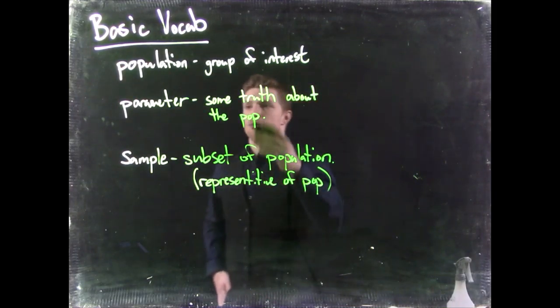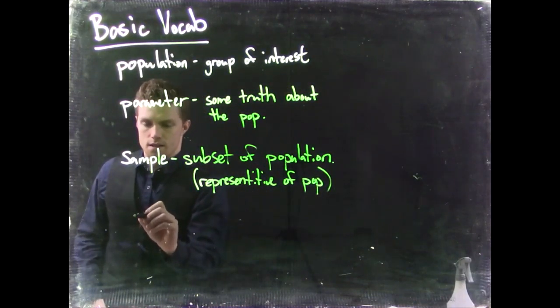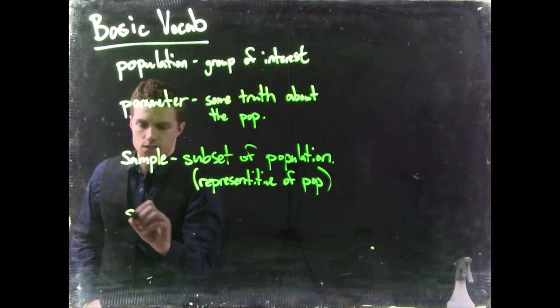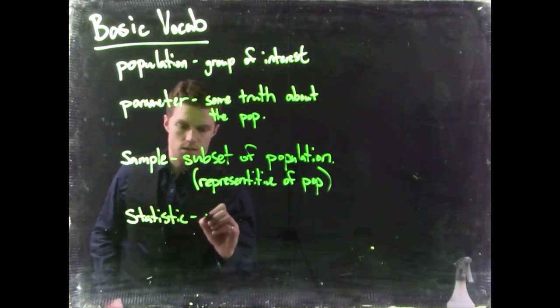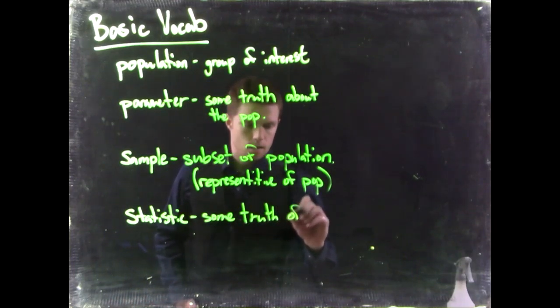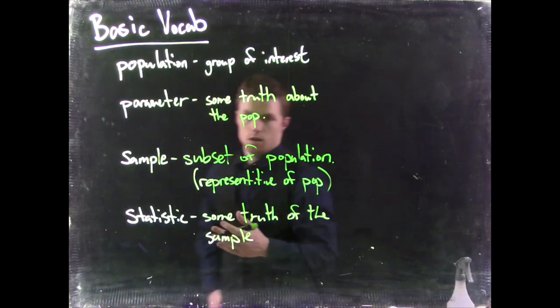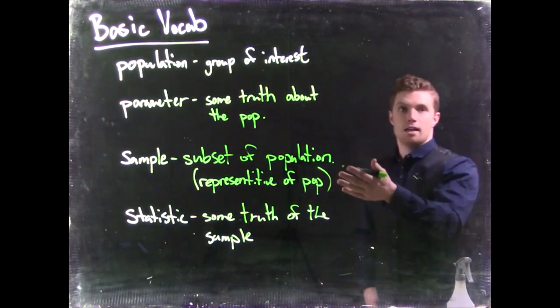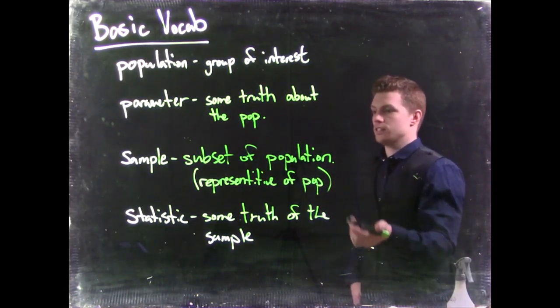Okay, and then the parameter, some truth about the population, what the same analogous to that is a statistic. And this is some truth of the sample. If I want to know the average height of all the men that I sampled, that's easy to do. I just take the average of the height of everybody that I sampled.